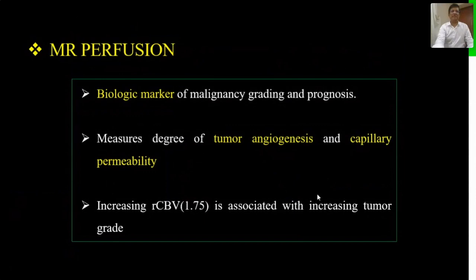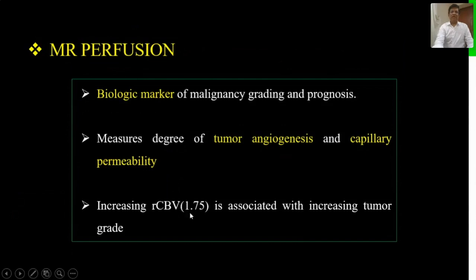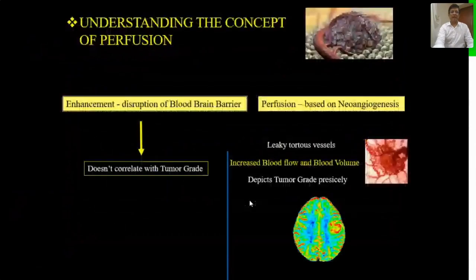MR perfusion is today considered as the biological marker of malignancy grading and prognosis in brain tumors. It measures the degree of tumor angiogenesis and capillary permeability, which is considered the hallmark in differentiating benign from malignant tumors and in malignant tumors, determining what grade you are dealing with. Increased RCBV — typical cutoff is 1.75 — is almost always associated with higher tumor grades. Anything lesser than that is considered closer to benign.